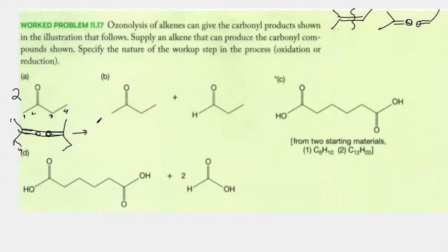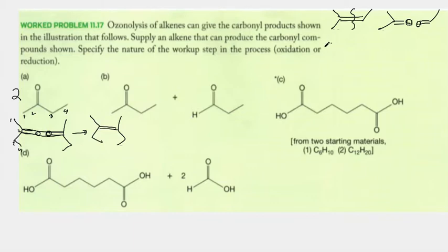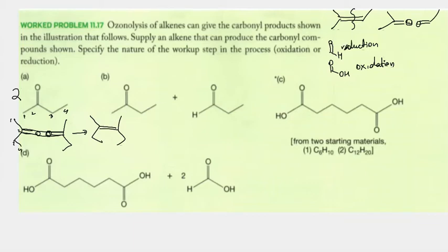So we're going to show the product — and I'm sorry for the noise, there is some construction outside — but this must be my product for A. Now it asks whether the workup was oxidative or reductive. For reduction, aldehydes remain as C=O; under oxidation they become carboxylic acids C=O-OH. Here I can't really tell because I don't have any aldehydes or carboxylic acids, so for this reaction it could be either — either oxidation or reduction would work.